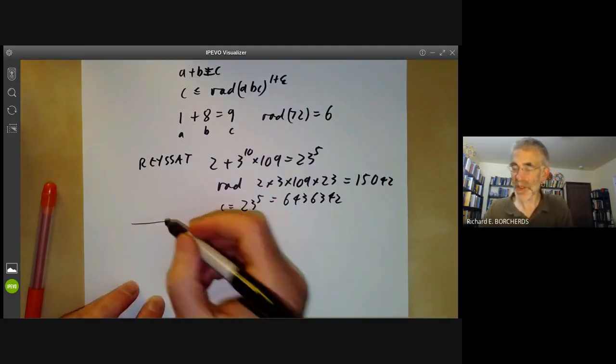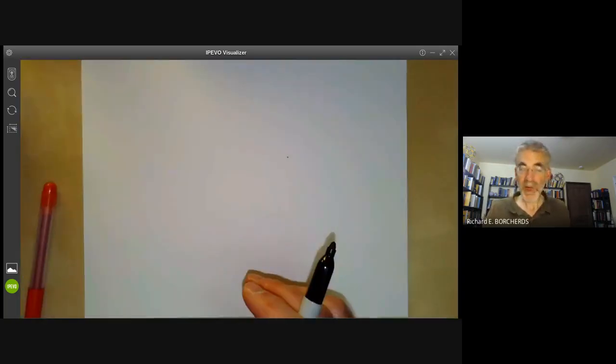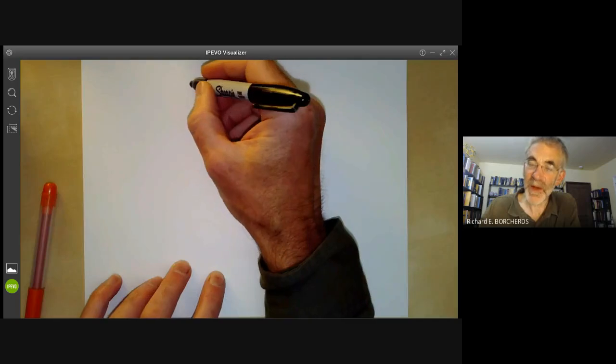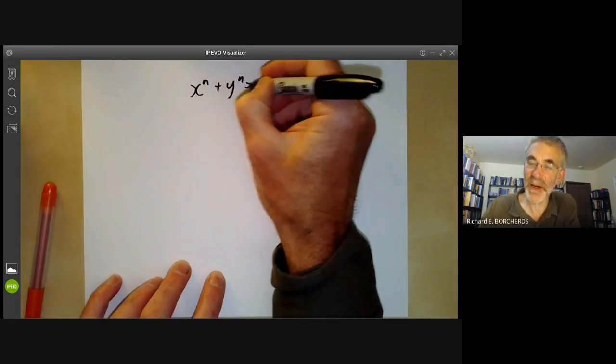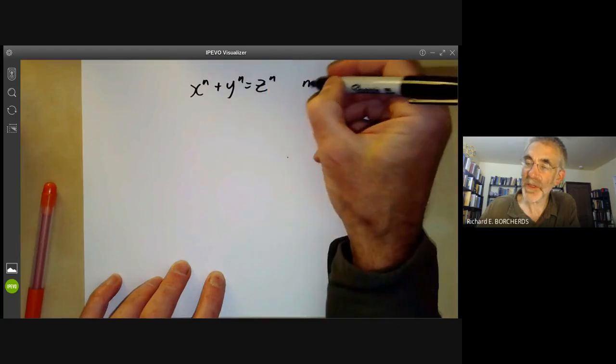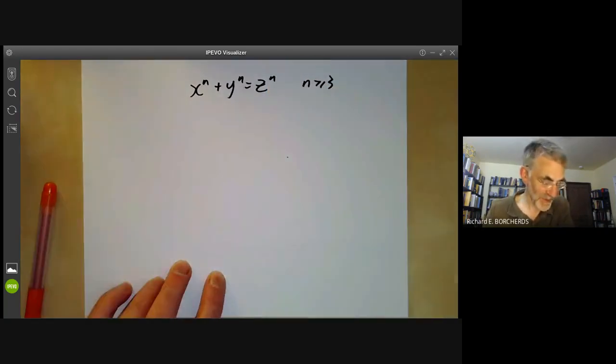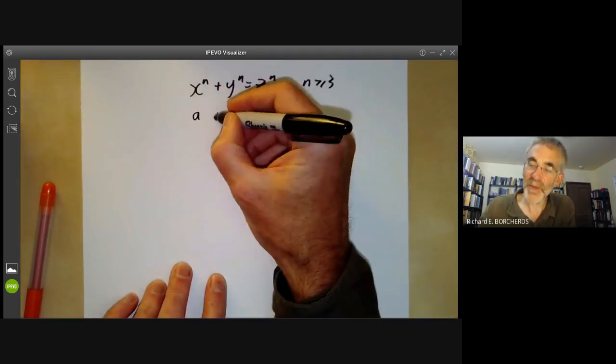So why are people interested in the ABC conjecture? Well it implies a whole string of other very deep conjectures in number theory. I'm not going to list them all, I'll just talk about one of them. So Fermat's last theorem says that x to the n plus y to the n equals z to the n has no non-trivial solutions for n greater than or equal to 3 apart from one of these being zero or something like that. Well if you write A is x to the n and B is y to the n